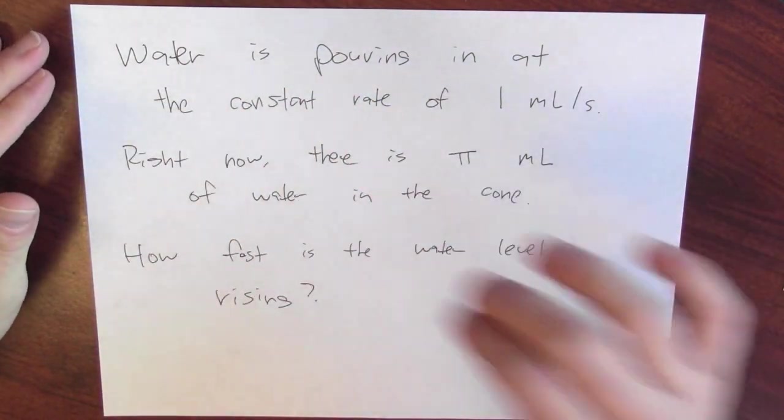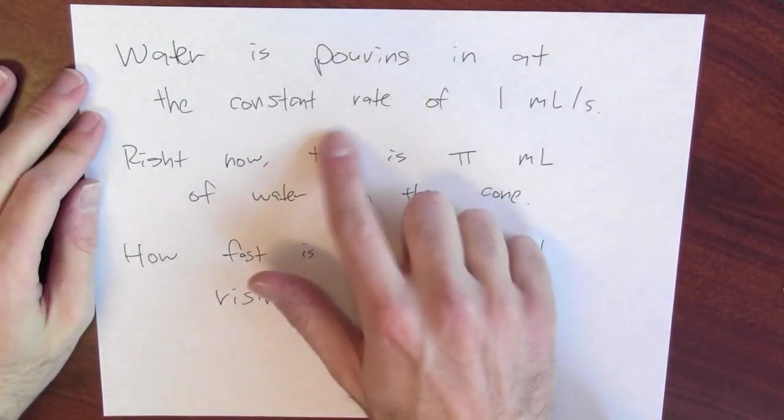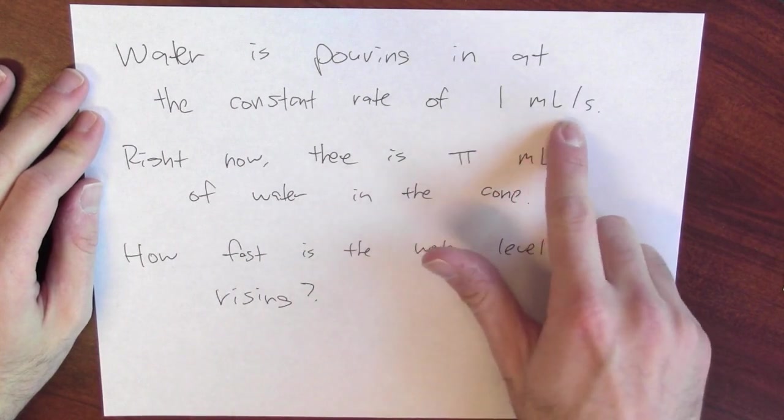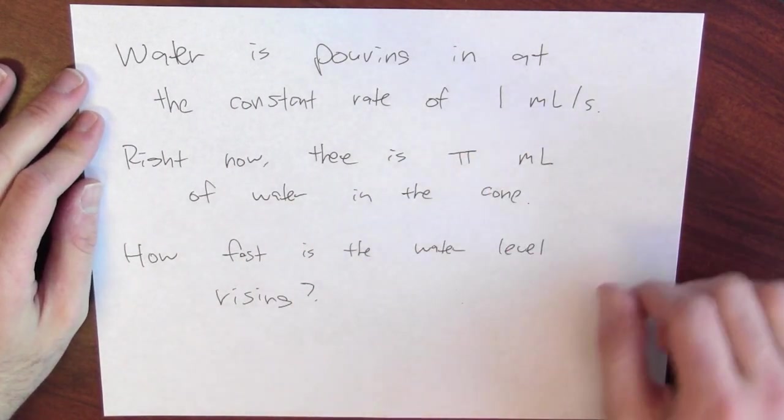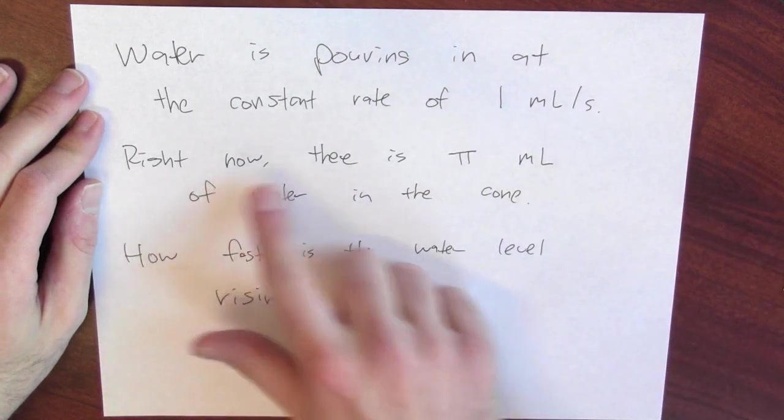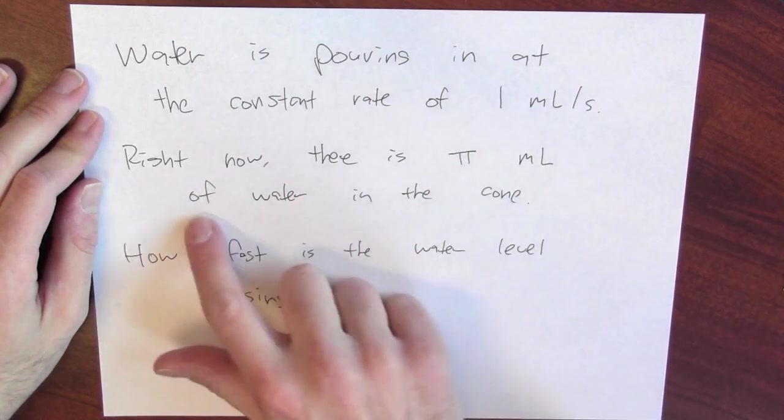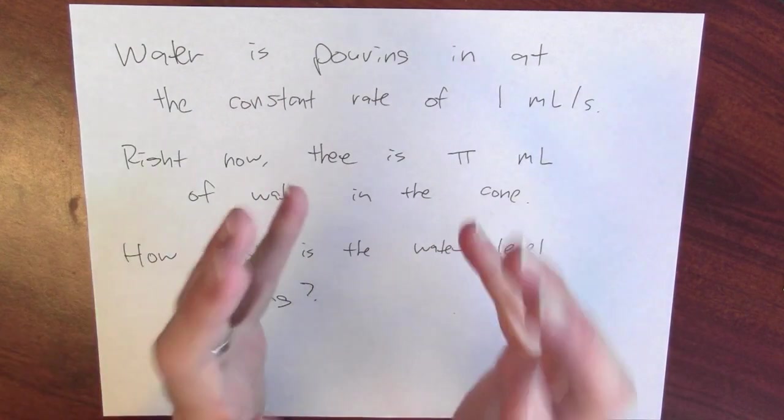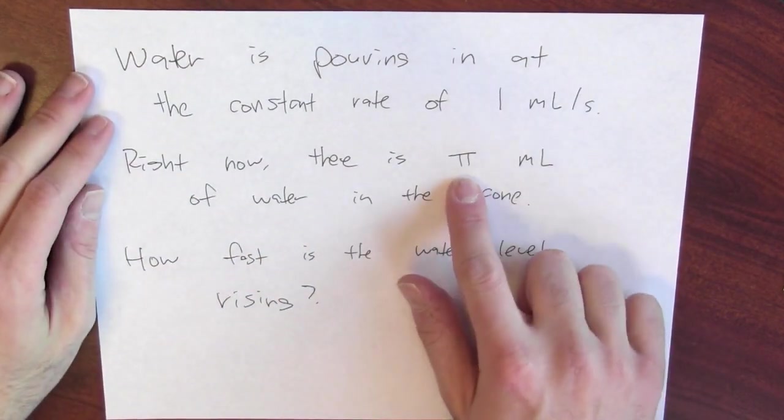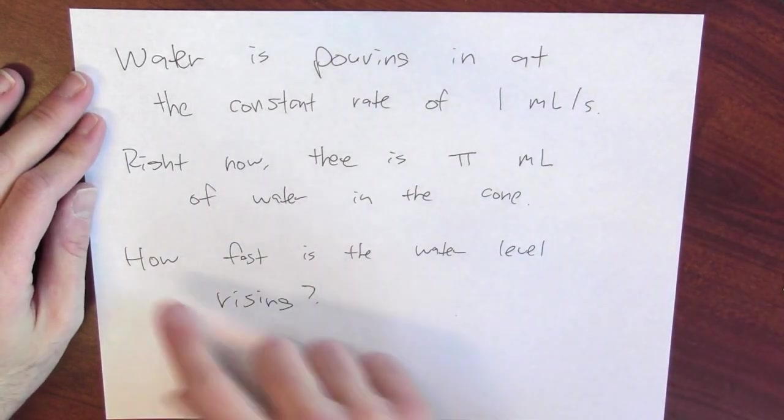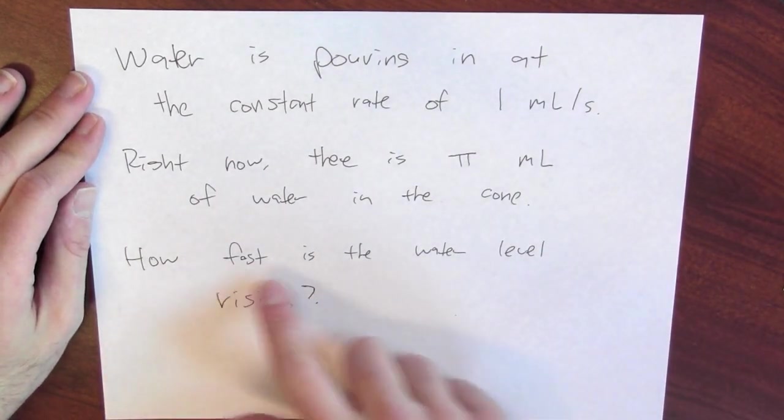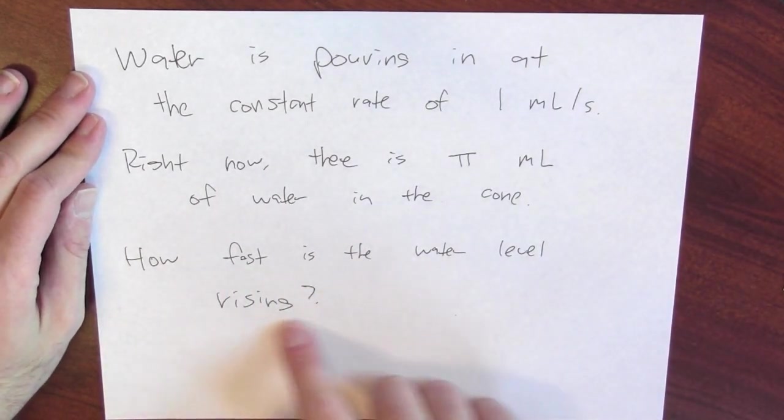Water is pouring into that cone at the constant rate of one milliliter per second. And remember that a milliliter of water is one cubic centimeter of water. And right now there's π milliliters of water in the cone. So the current volume of water is π milliliters of water in the cone. More water is pouring in. The question is how fast is the water level rising?